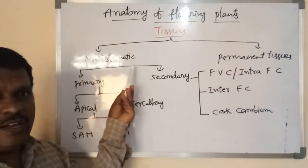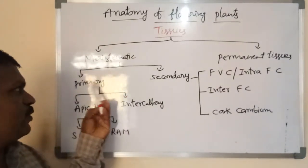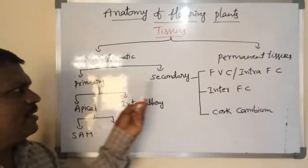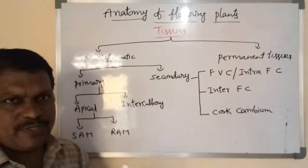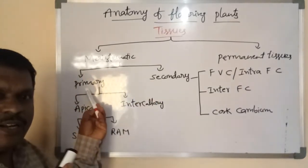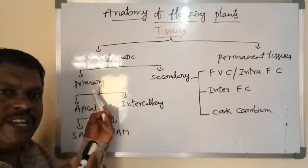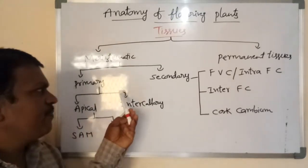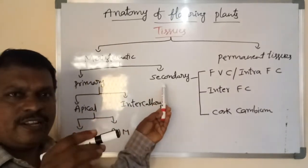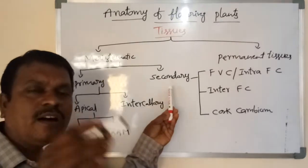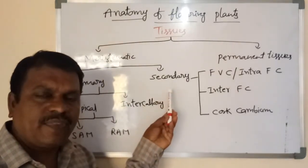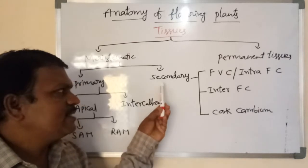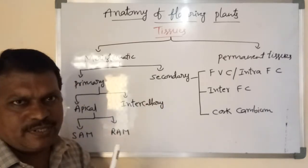Meristematic tissues are broadly of two kinds based on their origin: primary meristems and secondary meristems. Primary meristems are present in the primary stage of the plant, that means the initial stage, whereas secondary meristems originate in the plant body after attainment of maturity. After attainment of maturity, the plant body develops secondary meristems.